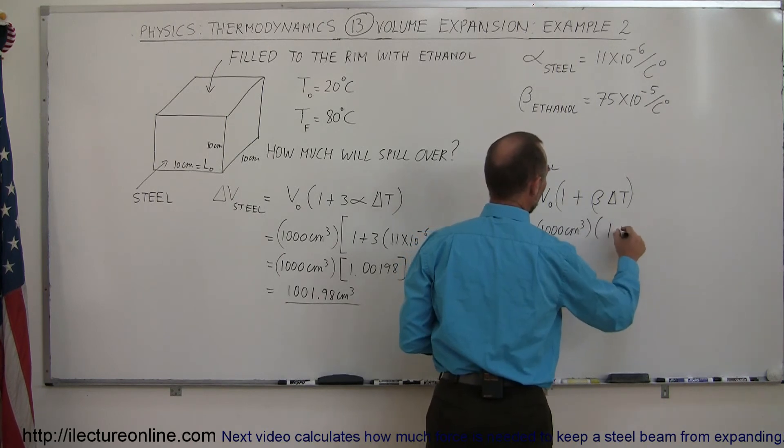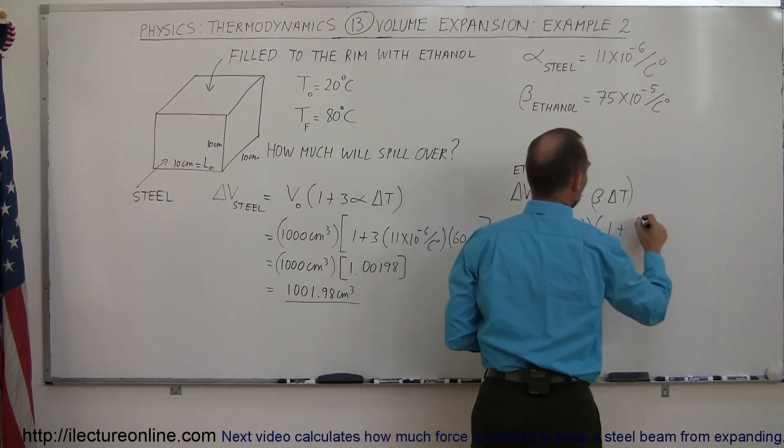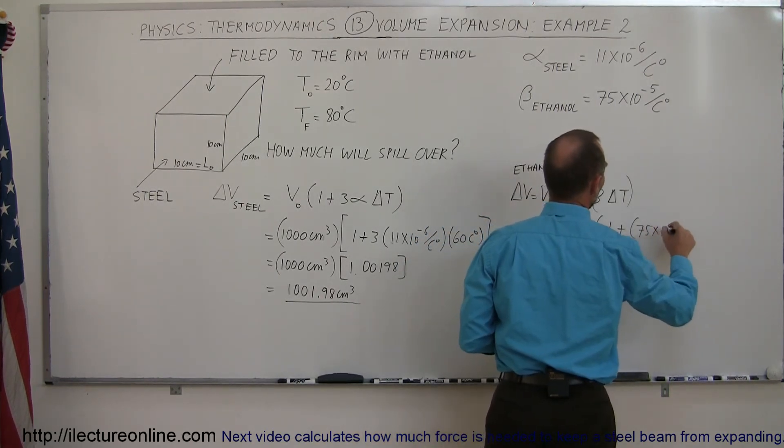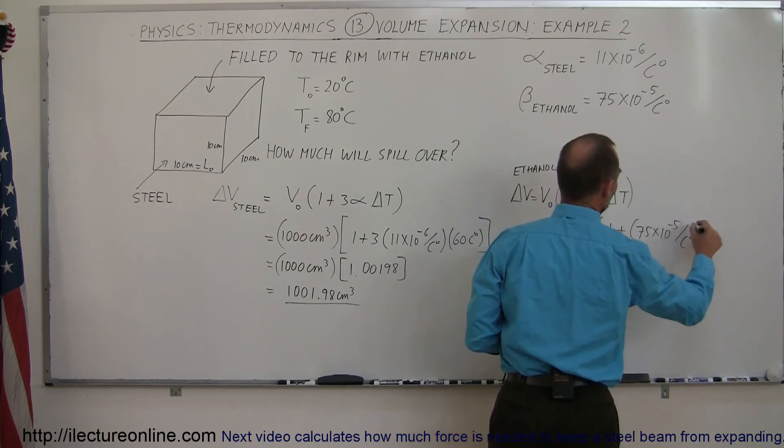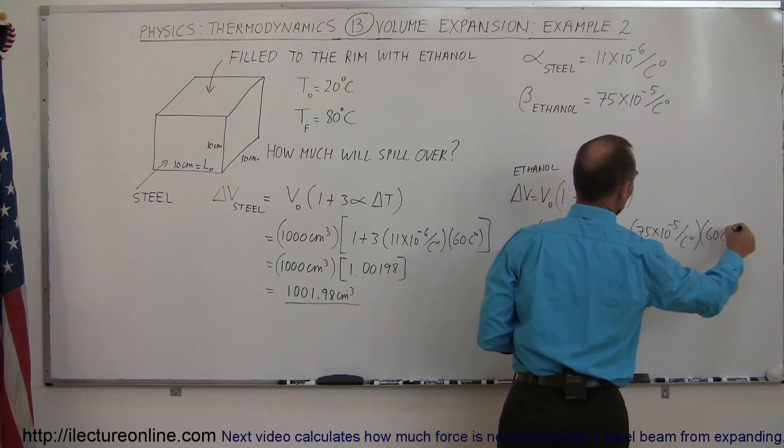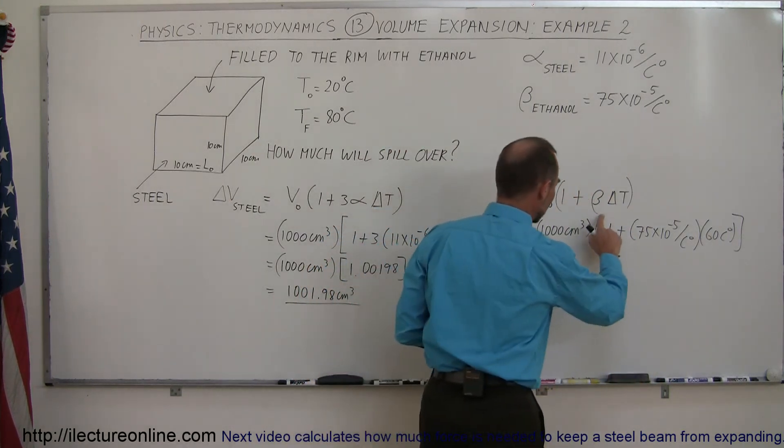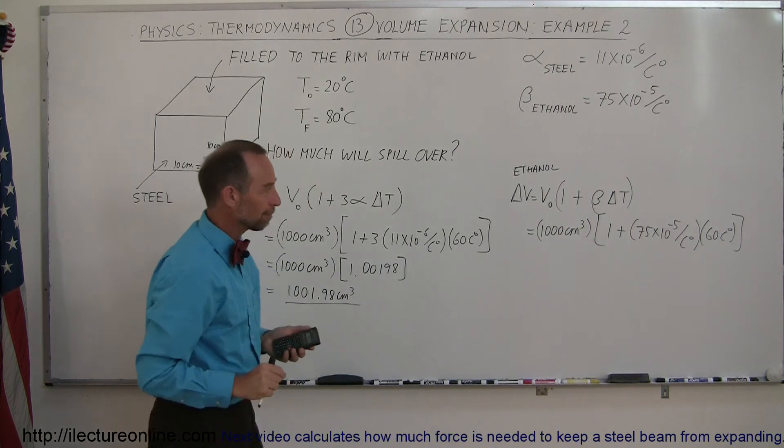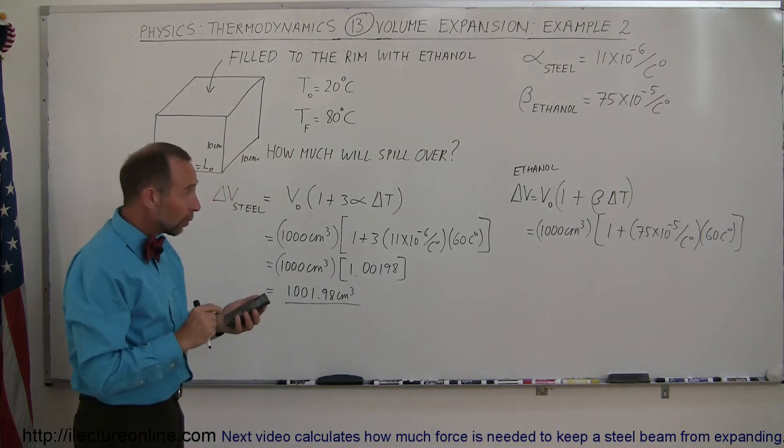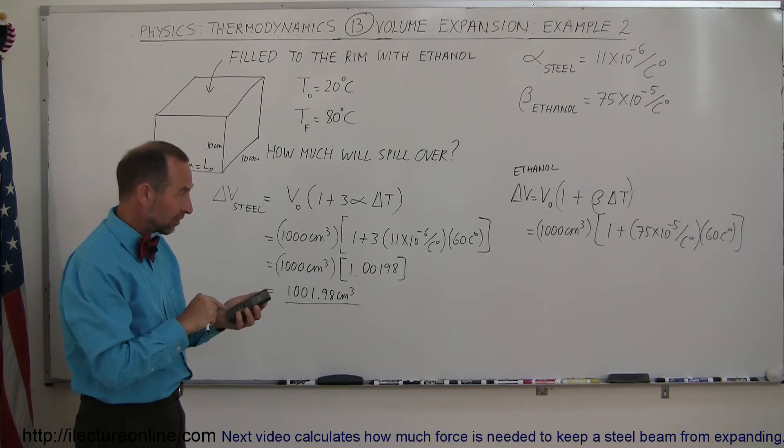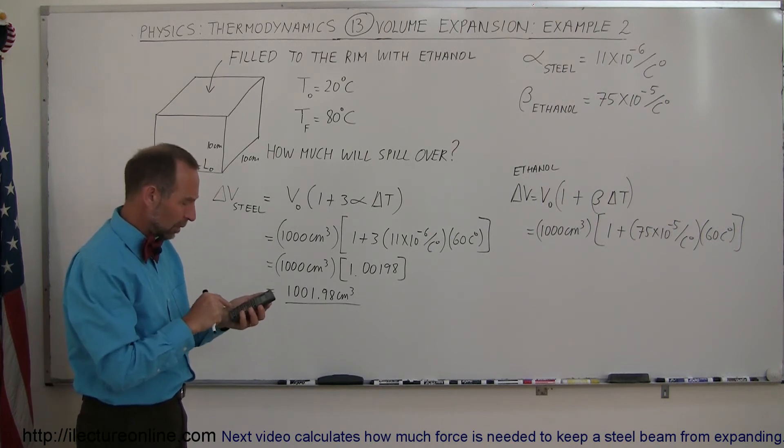We multiply that times 1 plus beta, which is now 75 times 10 to the minus 5 per centigrade degree, multiplied times 60 centigrade degrees, and that should give us the new volume. We'll put a box around it like that. So that would be 75 e to the 5 minus times 60 plus 1 equals.